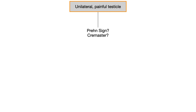Depending on what happens with the Prehn's sign and the cremaster reflex, we can differentiate right off the bat — using only these buzzwords if they're given to us — whether we're dealing with epididymitis or testicular torsion.